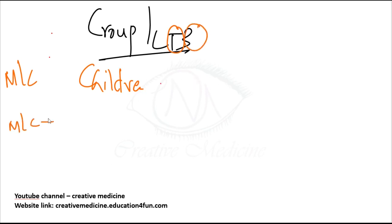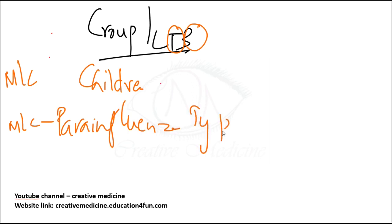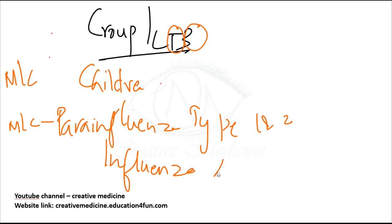What is the most common cause? It is caused by parainfluenza type 1 and type 2 virus most commonly. It is also caused by influenza virus and respiratory syncytial virus. So the most common causes in children are parainfluenza type 1 and 2, influenza type A, and respiratory syncytial virus.